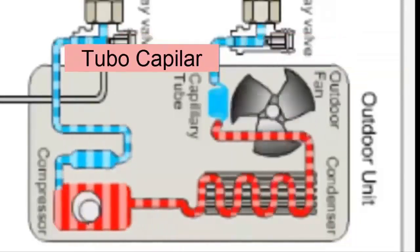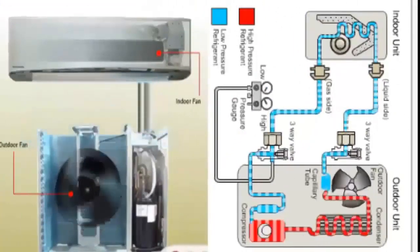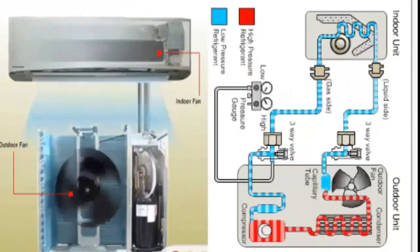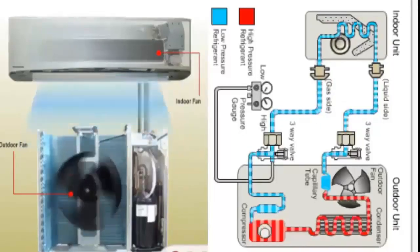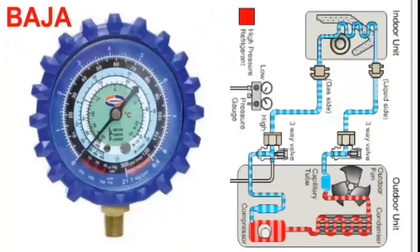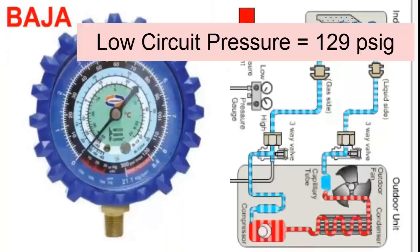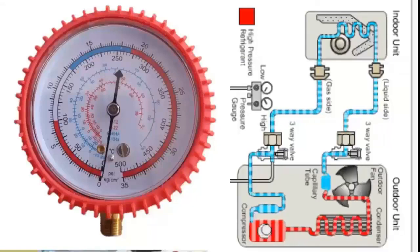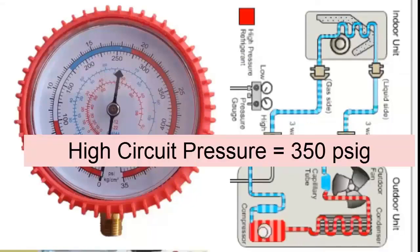We also have the pipes that connect the outdoor and indoor unit: 7. Liquid line; 8. Steam line. The pressures of R32 refrigerant gas are very similar to those of R410A. For an evaporator temperature of 5°C, the pressure gauge on an R32 air conditioner should read about 129 psi. The high pressure for an outdoor ambient temperature of 30°C should read close to 350 psi.